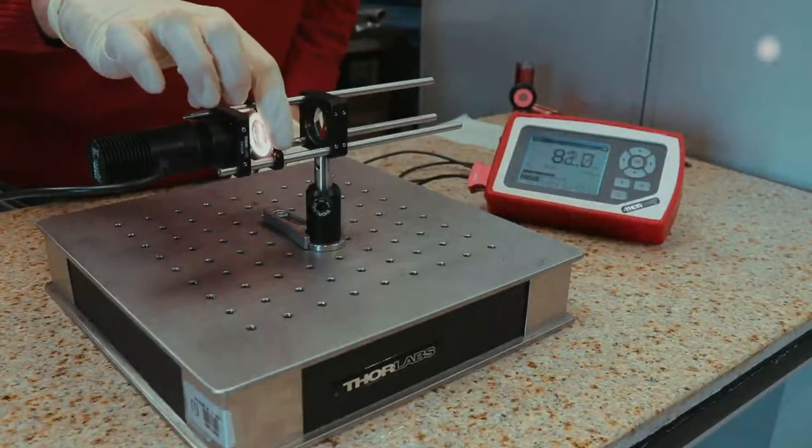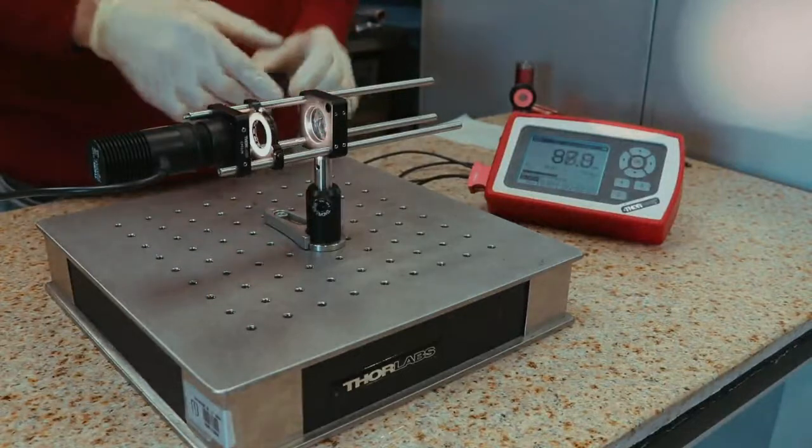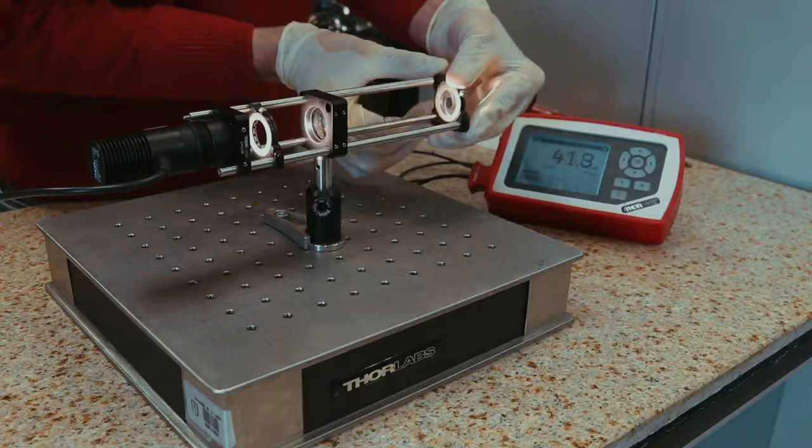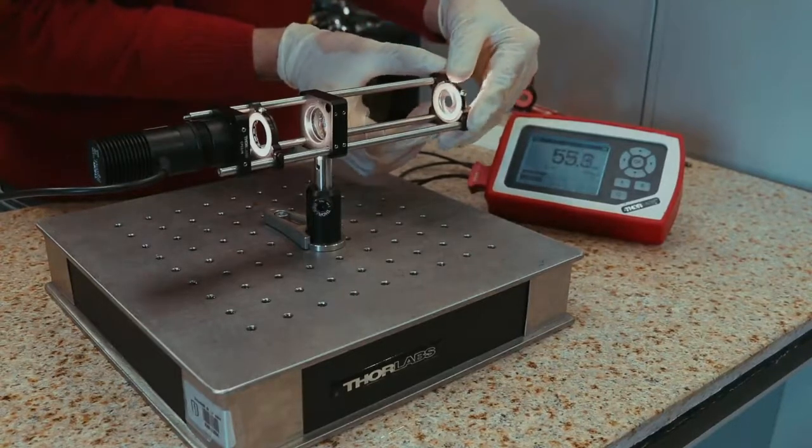Open the field diaphragm to its full aperture. Insert a cage iris after the first spherical lens. Close the second iris, the aperture diaphragm, to its minimal aperture.